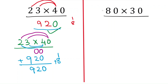Let's see another example: 80 times 30. Here there are two zeros, so keep two zeros and multiply the other digits — three times eight is 24 — giving 2400 as the answer. No need to multiply the zeros or do extra addition.